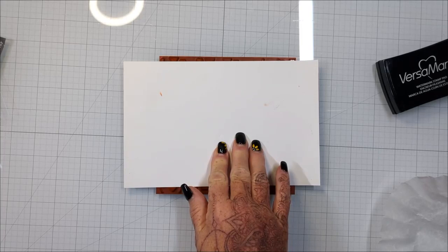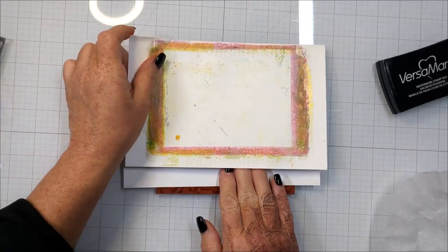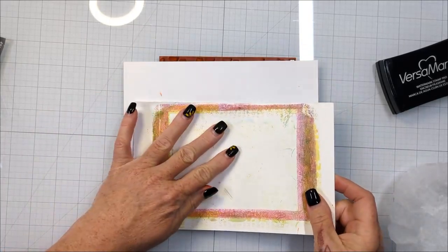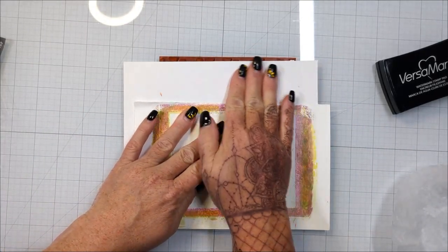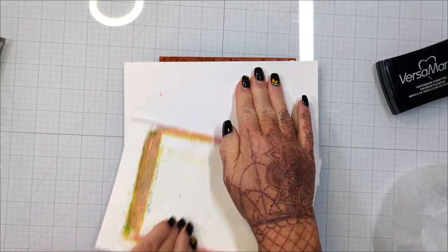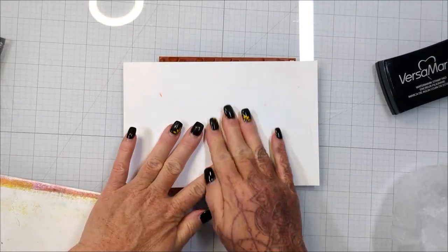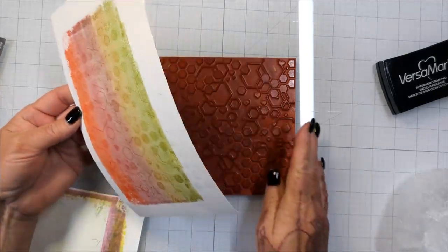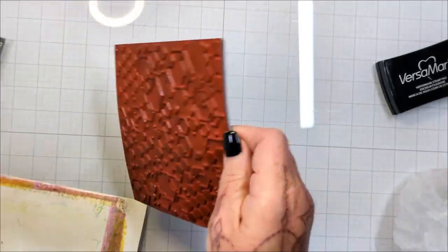And then I'm using my Versamark ink pad. Now you can use it as a watermark so you get a tone on tone, or obviously you can use it as an embossing ink because it stays sticky. And that allows the embossing powder to stick to your ink. It has a long open time, meaning it stays sticky and you have time to work with it.